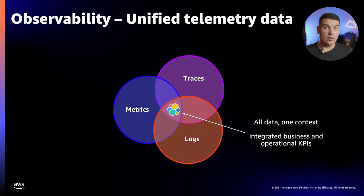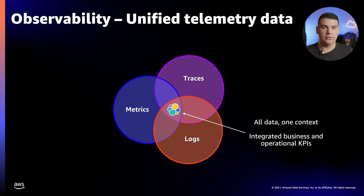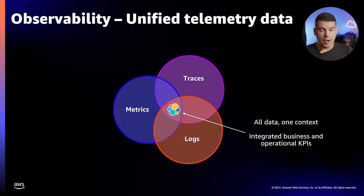A better way to look at observability is by unifying all the signal types into one cohesive context, which unlocks the ability of an organization to answer questions about its systems and services with much more confidence. By doing so, your metrics, logs, and traces will provide much more insight into the current state of your AWS environment. As a result of the unification, you will be able to correlate all the signal types with your own custom business and operational KPIs — and this is a proven way to justify observability to your organization.